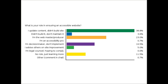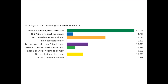Looking at poll results, almost 40% of you update content but didn't build your websites, and about 23% are web producers who are actually updating and building the content. That's really helpful for understanding who's joining us today. This is going to be 101 level — we don't plan to get into hard, detailed technical specifications, but we do plan to have you walk away with a higher-level understanding and some concrete, essential things you can do to improve your website's accessibility.